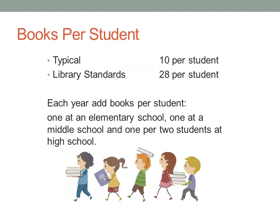A general rule of thumb for the typical number of books per student in a school library is 10 per student, with 28 being the high target as identified in the Model School Library Standards for California Schools, which was adopted by the California State Board of Education in 2010. The materials that are counted should be relevant and updated resources to provide a balanced collection for all ages and all abilities.